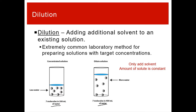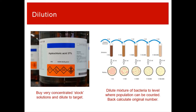You want to add particular amounts of solvent so that you get to a new, lower concentration. In the chemistry lab, when you buy a solution or chemical, they come really concentrated — we call them stock solutions. For example, HCl (hydrochloric acid) comes as a 37 percent solution. It's cheaper to buy it really concentrated and then dilute down to whatever you want.